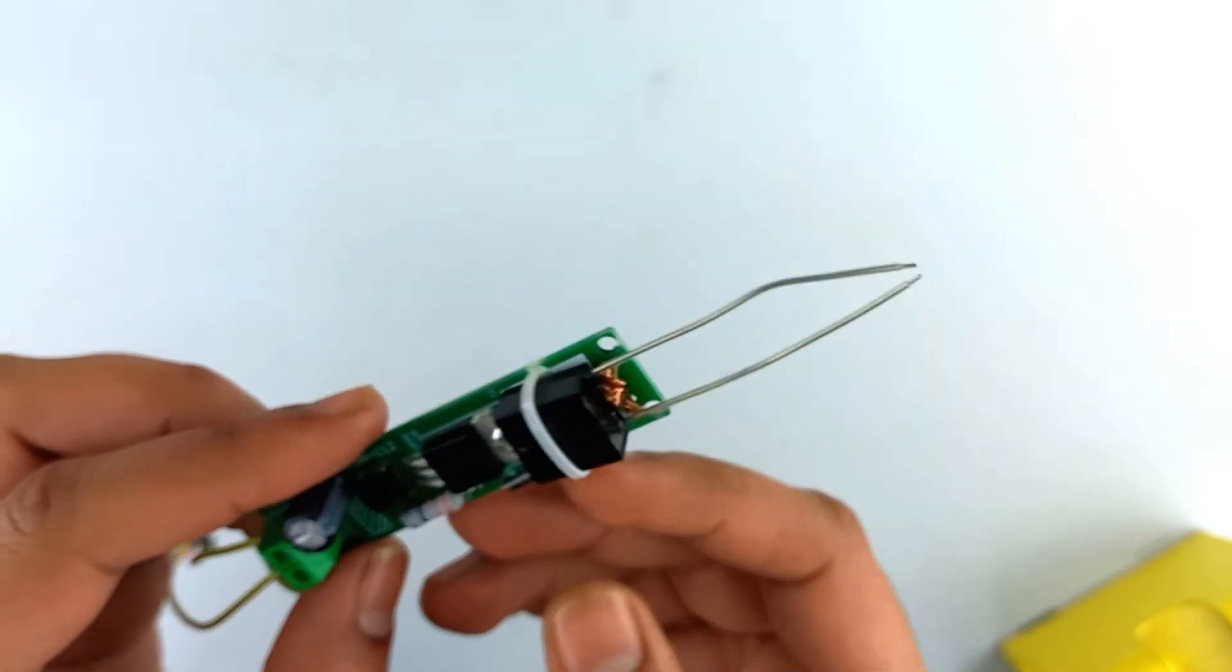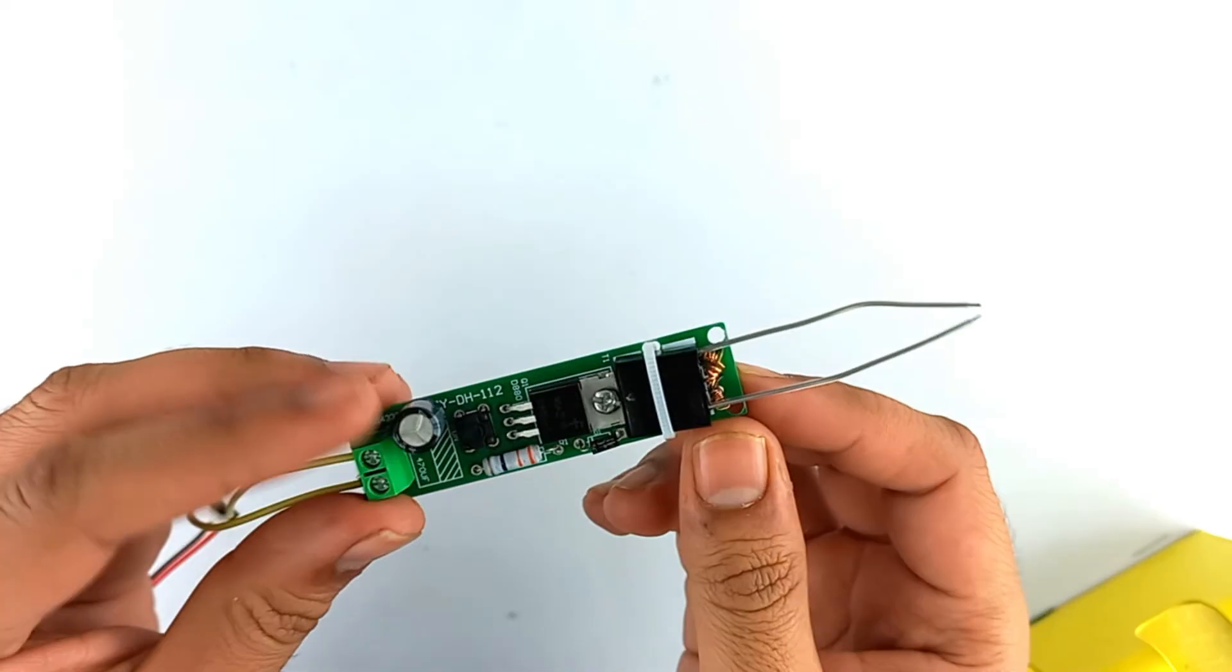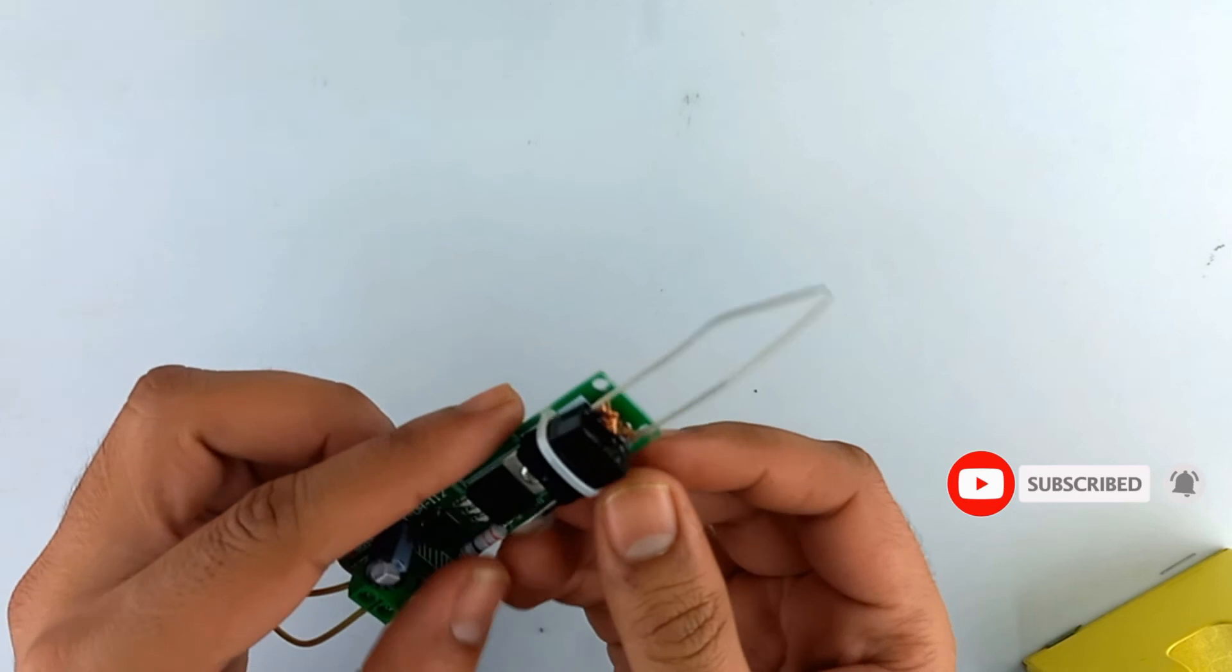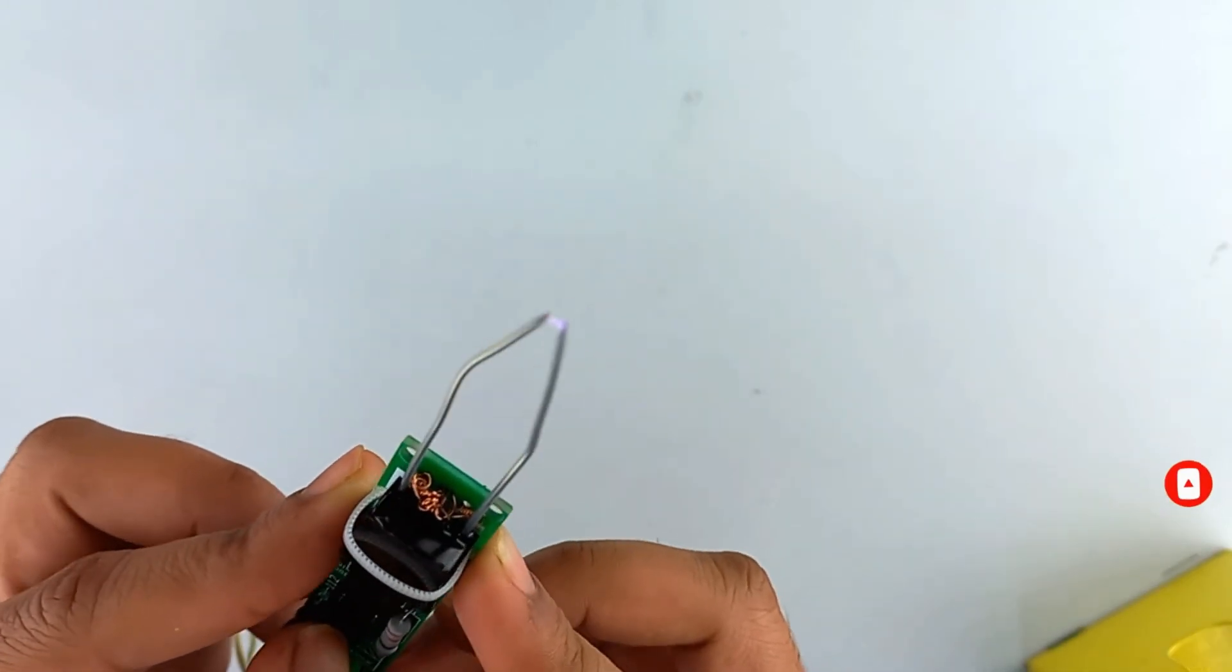So this is our electrical arc lighter. To buy the kit visit our site www.quartzcomponents.com. Thanks for watching, subscribe Quartz Component for more such videos.